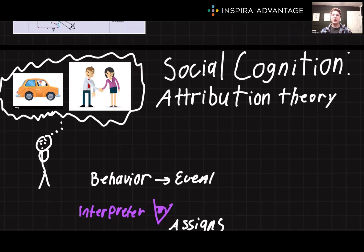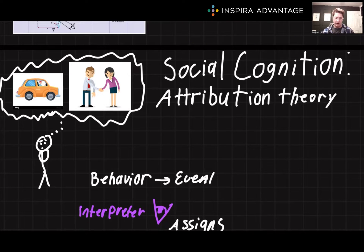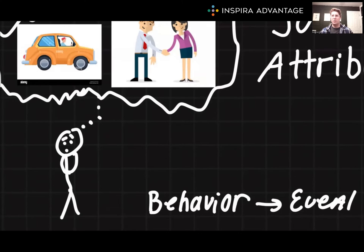This concept is crucial for understanding how we perceive and interpret the behavior of others, a key aspect of the MCAT's psych and social sections. We're going to cover high-yield topics like fundamental attribution theory. Attribution theory explores how individuals explain the cause of behavior and events, developed by psychologists like Fritz Heider, and it's a cornerstone of social psychology.